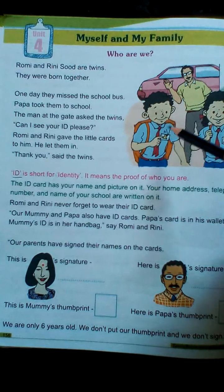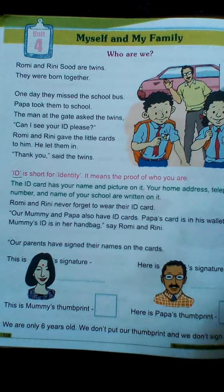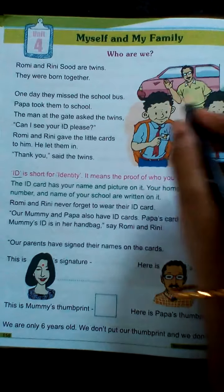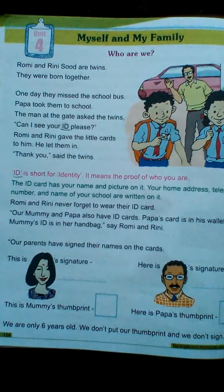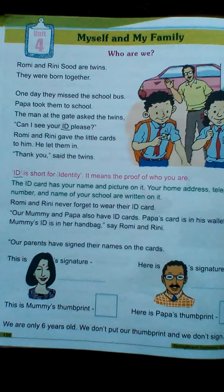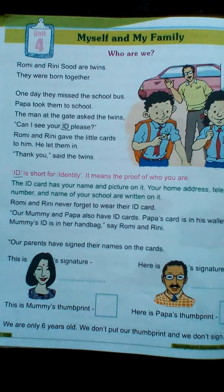What do you observe in this paragraph, children? You observe 'ID,' right? What do you mean by ID? ID is short for identity. It means the proof of who you are. An ID card is a proof of who you are. The ID card has your name and picture on it.